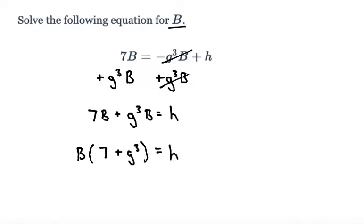That's equal to h. Now that I've factored out my b, I can take what's multiplied by the b and divide it on both sides. So if I divide both sides by 7 plus g cubed, because what I do to one side, I have to do to the other side.